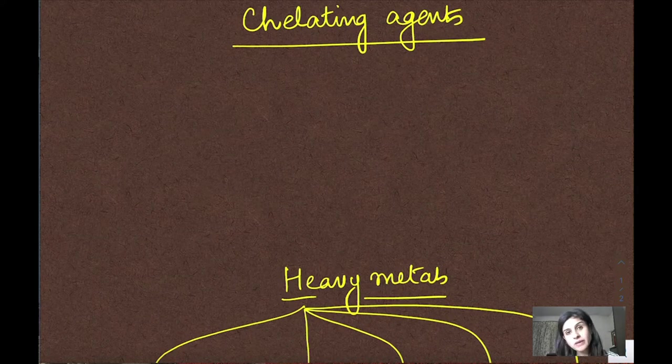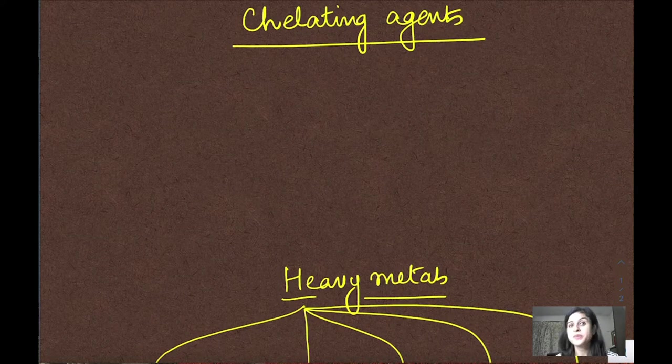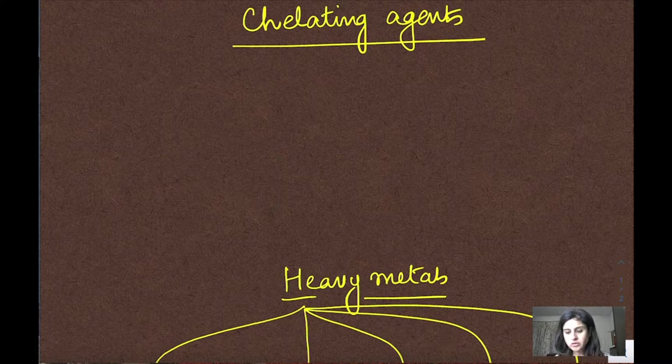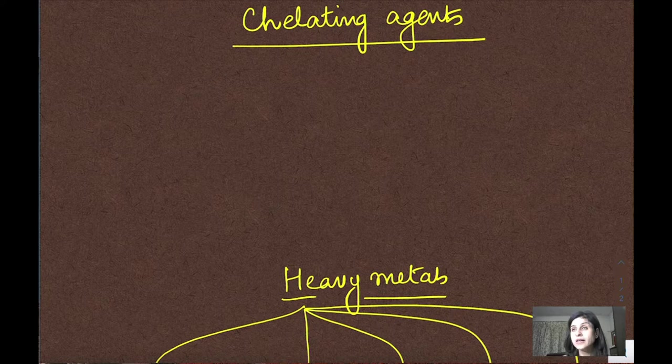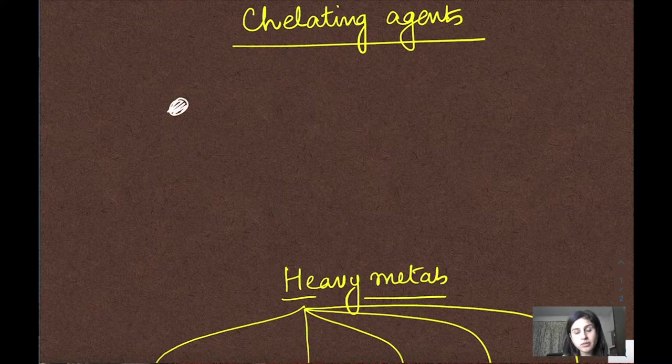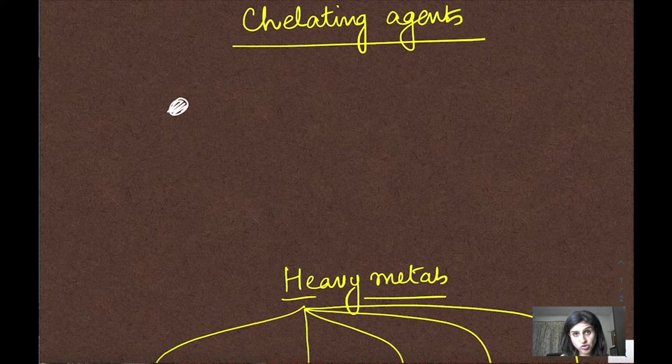Hello, we are going to talk about chelating agents. Chelating agents are used to chelate certain toxic metals in the body. For example, heavy metals in toxic amounts can cause problems by depositing in various tissues and causing issues within the body.